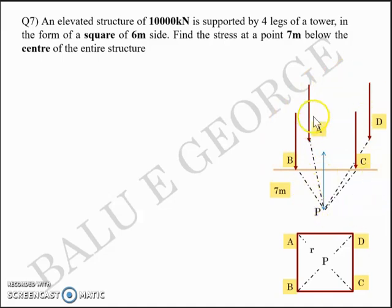I've marked the elevation here: A, B, C, D are four legs. You have 10,000kN distributed equally, so 10,000/4 = 2,500kN per leg. This is an application of the Boussinesq equation with radius R, depth Z and load Q. Q on each leg is 2,500kN. Radius R is the same for all: AP = BP = CP = DP, which is half the diagonal. Half the diagonal = 4.24m.